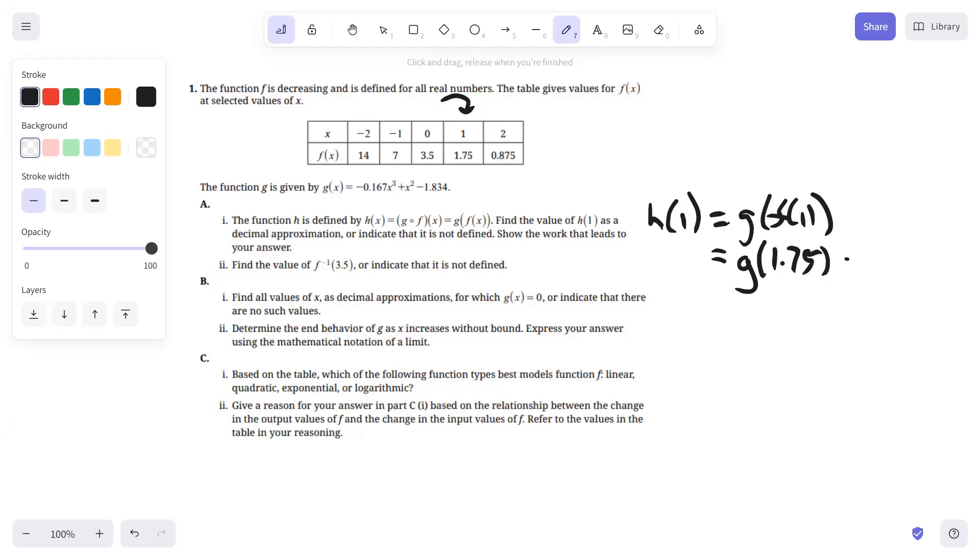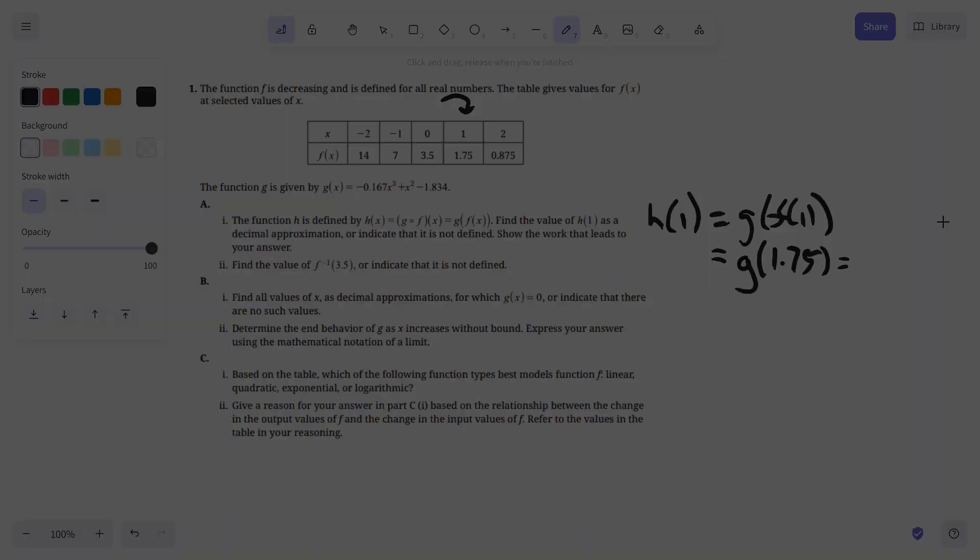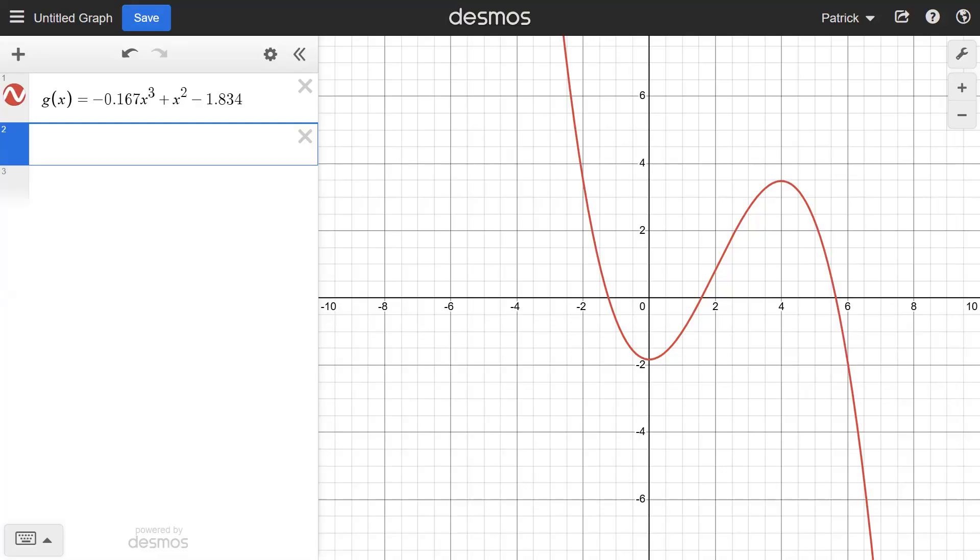And then I recommend that you run over to Desmos, plug the function G in, and evaluate it at 1.75. Here we have the function G, and then we just type in G of 1.75, and you get 0.33348, which we would report as 0.333.